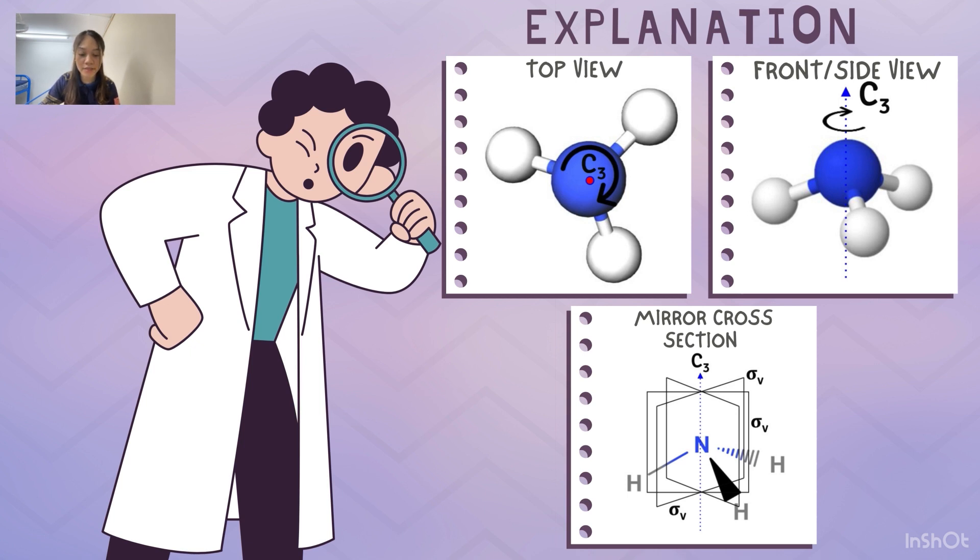The symmetry operations in ammonia molecule. As we explore the symmetrical features of ammonia, it is crucial to understand the operations that transform the molecule while preserving its symmetry. This operation provides a lens through which we can appreciate the elegance of ammonia's molecular dance.